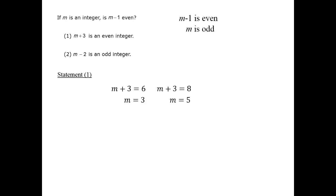We can see that this must always be the case. It's a rule of odd and even integers that the only way to add an odd number with another number and get an even number is if that missing number is also odd. Therefore, statement 1 is sufficient.